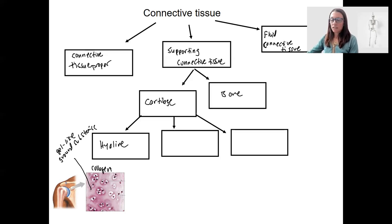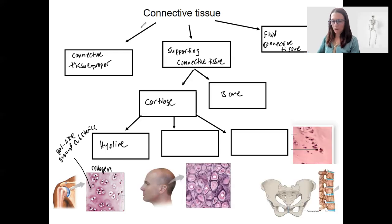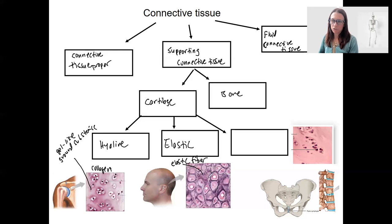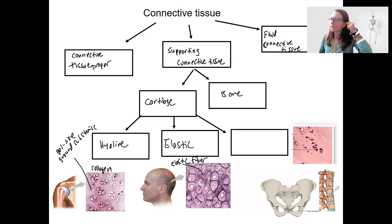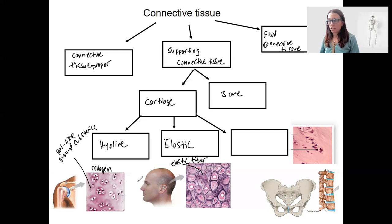Next we've got elastic cartilage. You can see the elastic fibers here — that's the main reason we look at this in lab, so you can see what elastic fibers look like. Elastic fibers are also located in areolar tissue, but they're hard to identify there. This cartilage is actually located in the ear, so it's a little bit stretchier than hyaline cartilage — literally because it's elastic and stretchy.